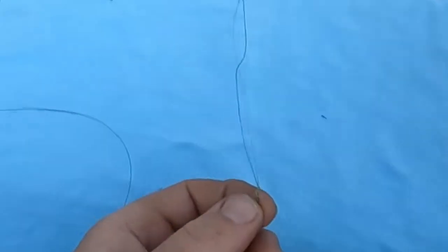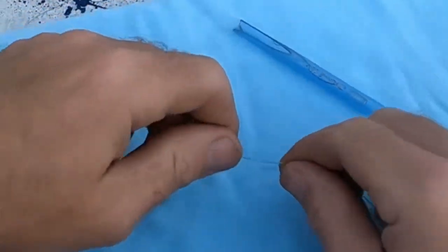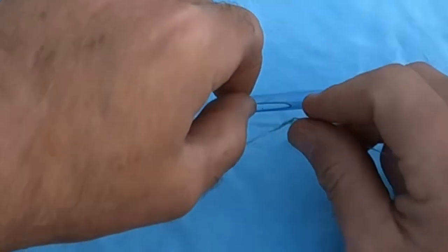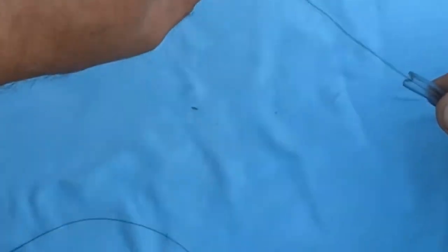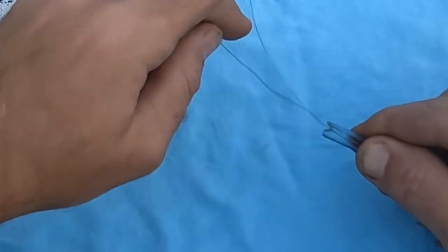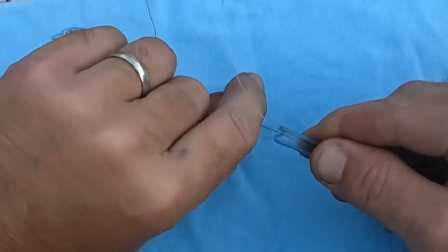Then you'll invert everything the other direction and simply take that knot right there, put it right there in the edge of the tube. You want both pieces inside the tube.